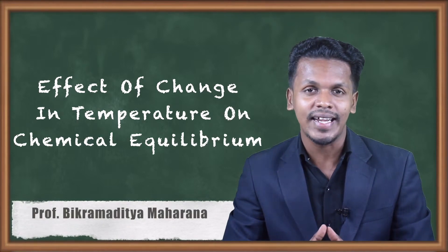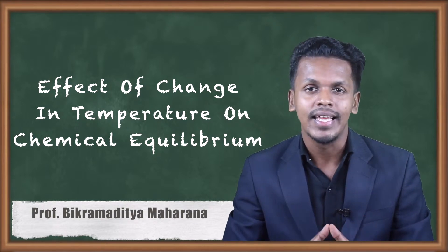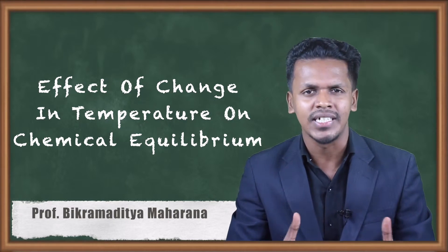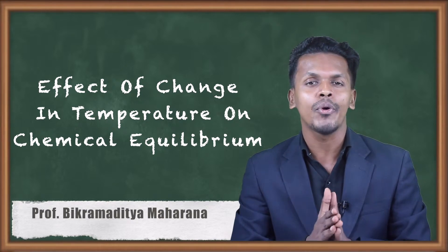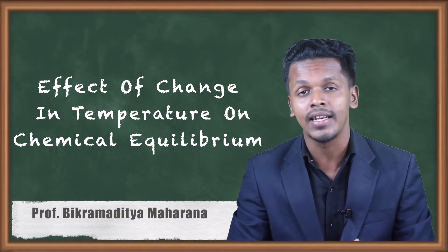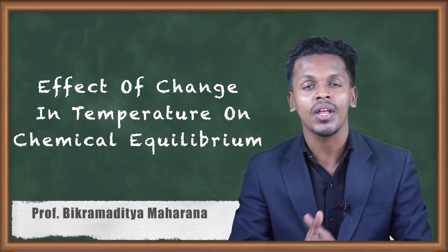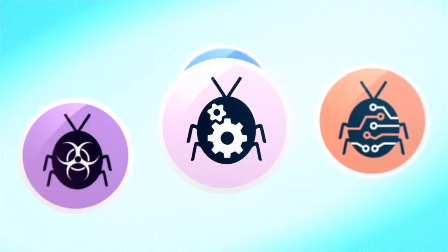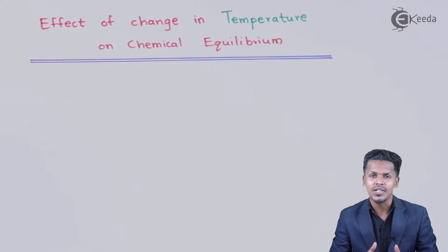In the previous lecture we understood how pressure and volume can alter a reversible reaction — turning it into a forward or backward reaction depending on the situation. Now we are going to talk about how temperature plays a very vital role in a reaction exhibiting chemical equilibrium.